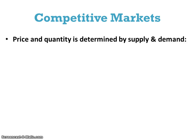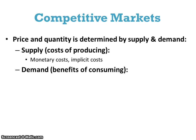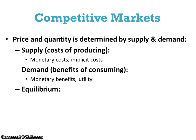In competitive markets, price and quantity is determined by supply and demand. Supply, or the cost of producing items, includes the monetary and implicit costs of production. And the demand curve, which represents the benefits of consumption, represents the monetary benefits to consumers and the utility — remember the marginal utility curve as the individual's demand curve. So the equilibrium tells us when production costs equal consumption benefits.